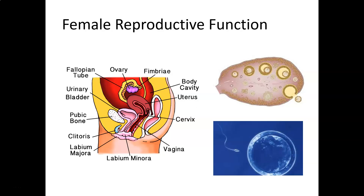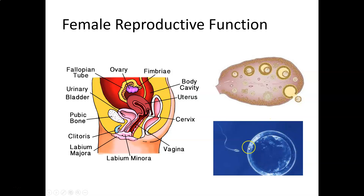Men produce billions and billions of sperm; women produce a couple hundred eggs over a lifetime — a huge difference in reproductive strategies. This structure here is called a fertilization halo, which prevents multiple sperm from entering. Humans have two sets of 23 chromosomes — one from mom, one from dad — giving us a diploid number of 46, which is the ideal. Down syndrome, for example, results from an extra chromosome 21.